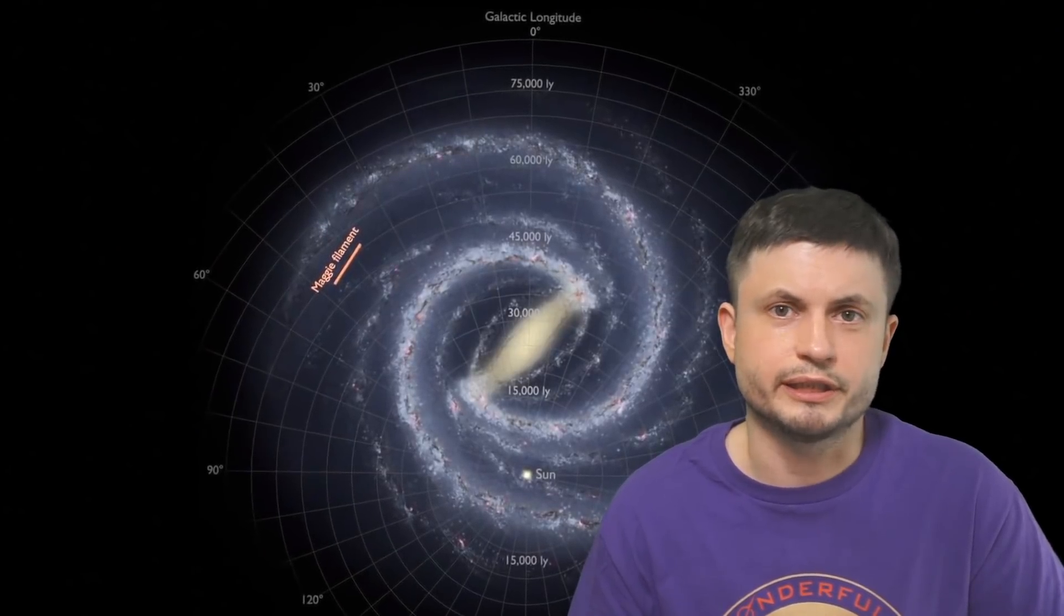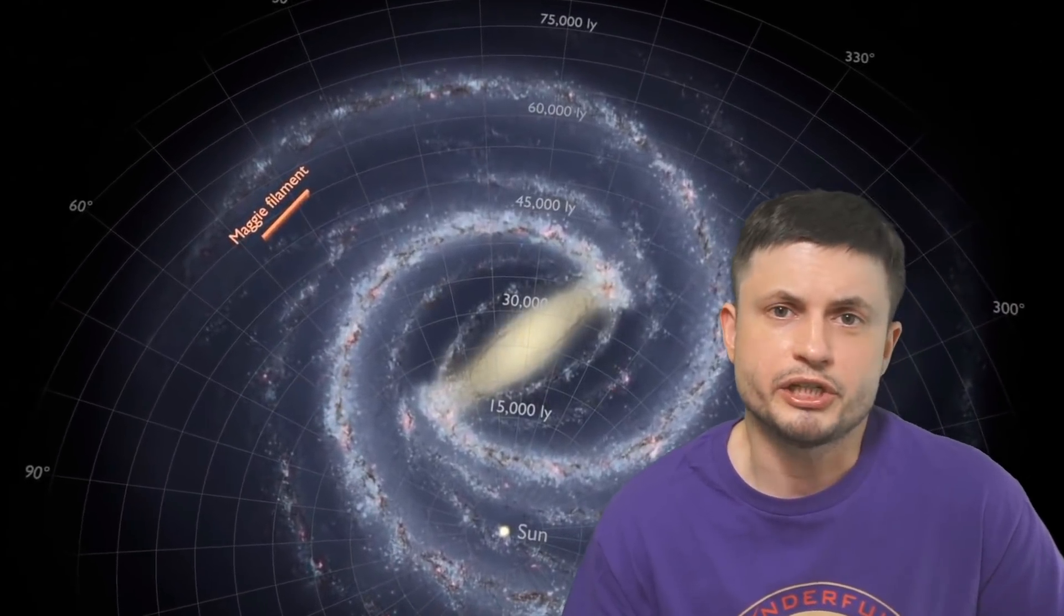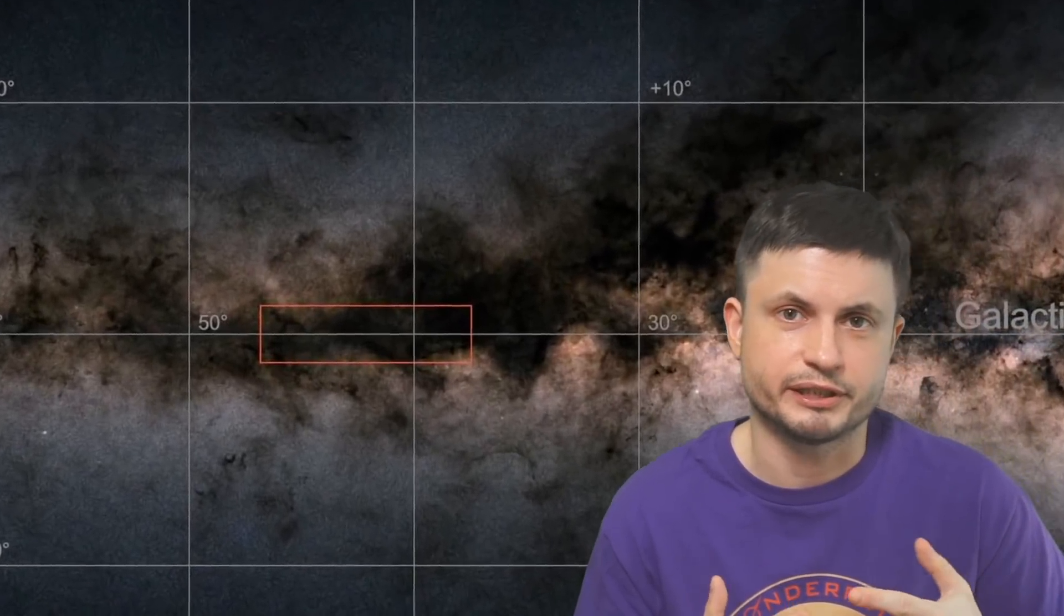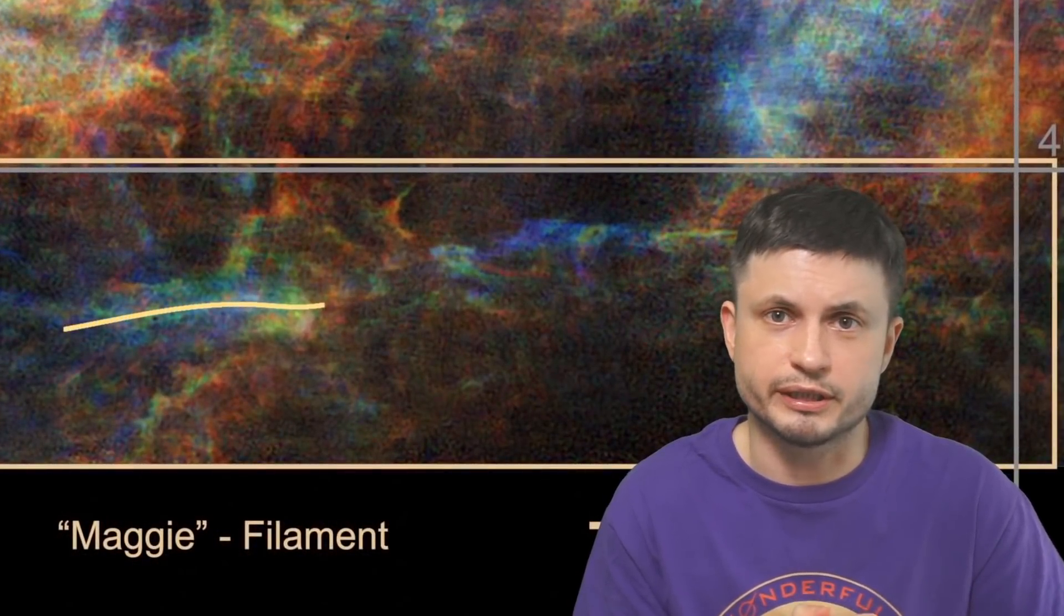But at the moment, it's also unclear what exactly created this and how any of this works. One implication here, or I guess one suggestion, is that maybe all of this is somehow controlled by the magnetic field of the galaxy. And once the power of the atoms and basically power of gravity overcomes the magnetic field, that's when the filament collapses into various clouds and starts producing stars.